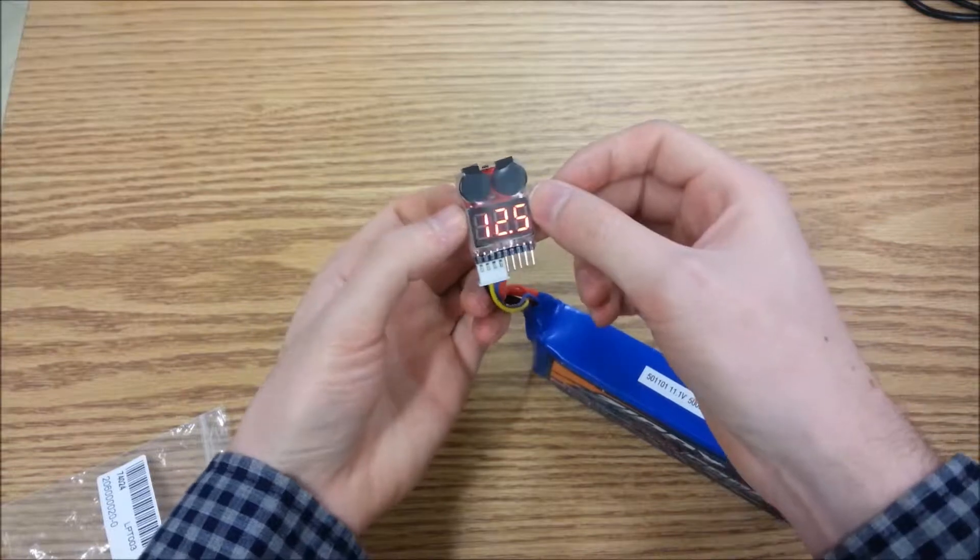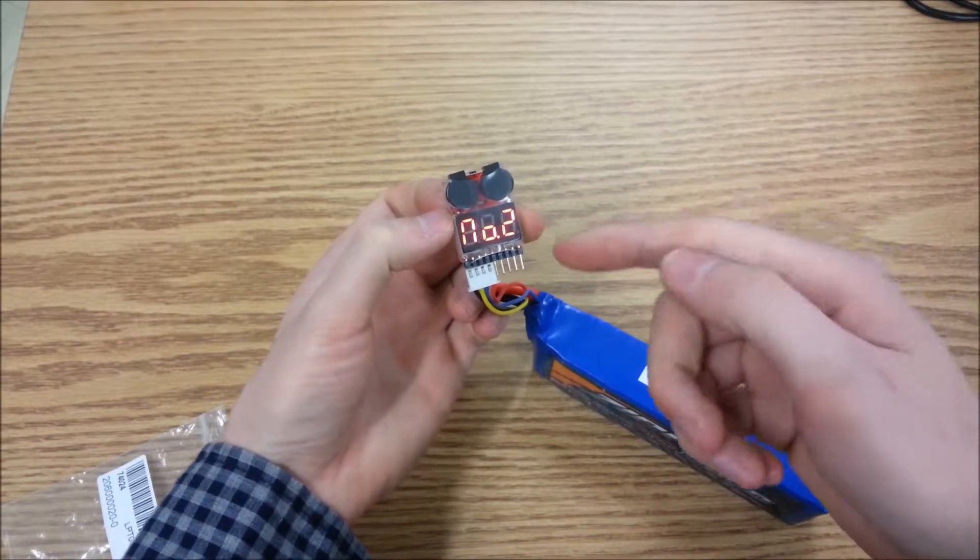It tells you how many cells your battery has, your current battery voltage, and then the voltage at each cell.